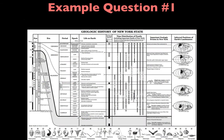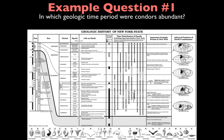Let's look at some example questions. The first is: in which geologic time period were condors abundant? Condor is a specific index fossil — it is fossil S, found at the bottom of page 9. You find where fossil S exists within the chart, which is really close to present day near the top of the chart. Once you locate fossil S, bring that spot over to the period column, and you'll see that it's part of the Quaternary period.